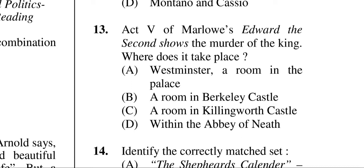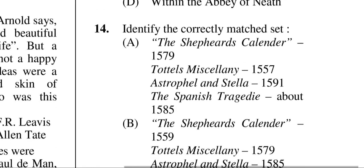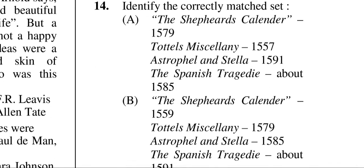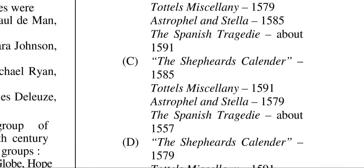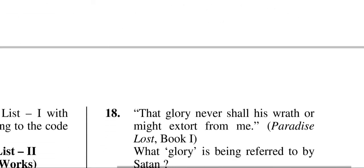Question thirteen: Act five of Marlowe's Edward II shows the murder of the king — where does it take place? It takes place in B — a room in Berkeley Castle. Question fourteen asks to identify the correctly matched set: The Shepheardes Calender 1579, Tottel's Miscellany 1557, Astrophel and Stella 1591, The Spanish Tragedy about 1585.